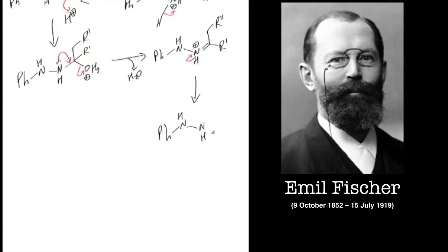So we end up with our first intermediate, which is the phenylhydrazone. N-H and H. So there we are, R prime, R double prime. That's our phenylhydrazone.